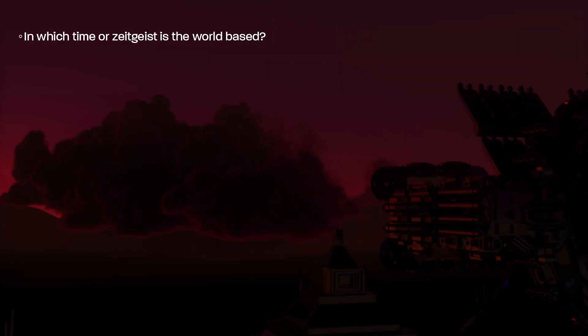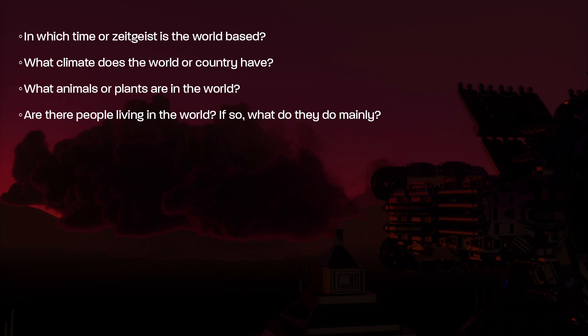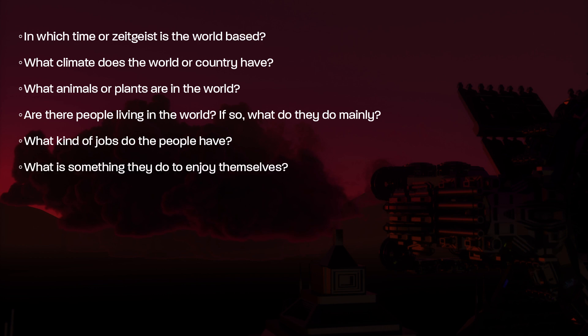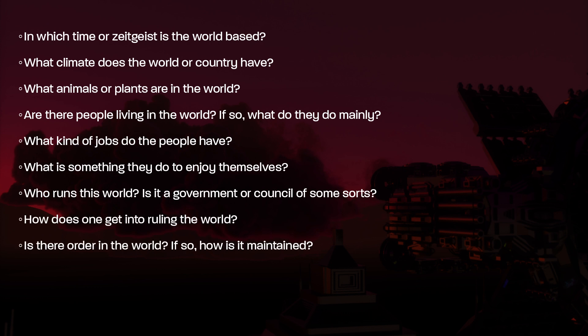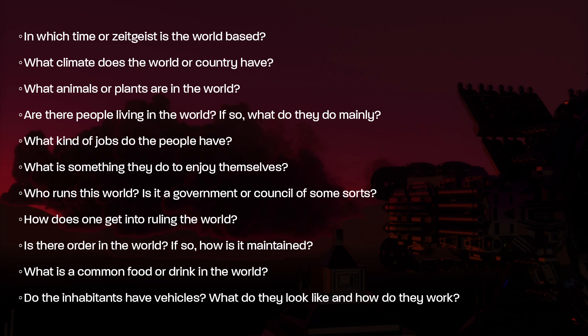Now that you know the principle of world building, let's see how you can make your own story world. This really works well if you do it with multiple people — I was lucky to do it on a live stream, but you can just have a couple of friends over with pens, pencils, and paper. Here are some questions to get you started: In which time or zeitgeist is the world based? What climate does it have? What animals or plants live there? Are there people, and if so, what are they like? What jobs do they have? What do people do to enjoy themselves? Who's running the world — a government or council? How does one get into ruling it? Is there order, and how is it maintained? What is a common food or drink? Do the inhabitants have vehicles, and what do they look like?